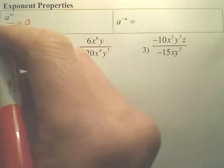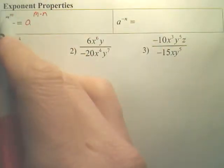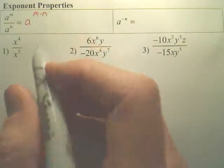what you do is you simply keep the base but you subtract the powers. This is the shortcut. So for this scenario you would subtract the powers.